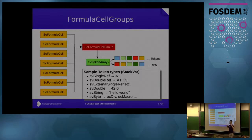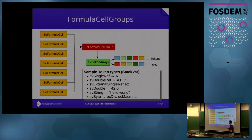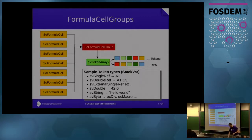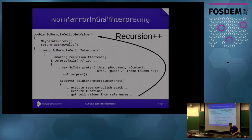There are a whole load of different token types. Key ones include single references - get a cell from A1 - double references for getting a range of cells, which can be three-dimensional ranges across multiple sheets. There are special cases for external references, simple numbers and strings, and then operations like division or executing a macro with parameters.